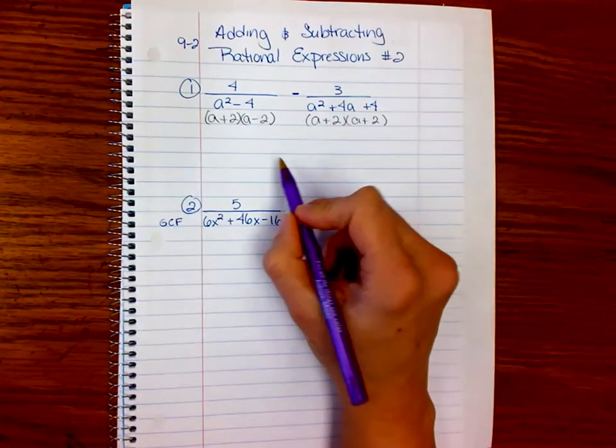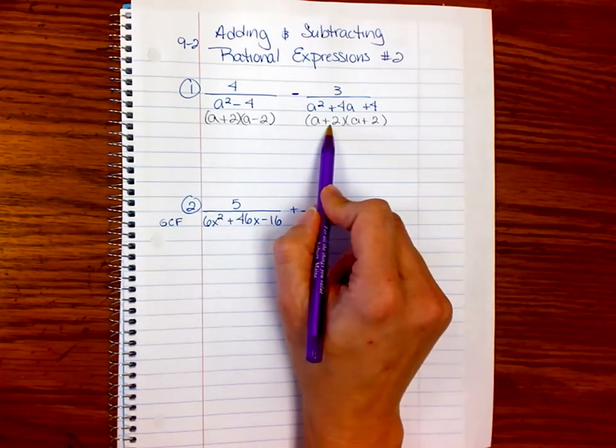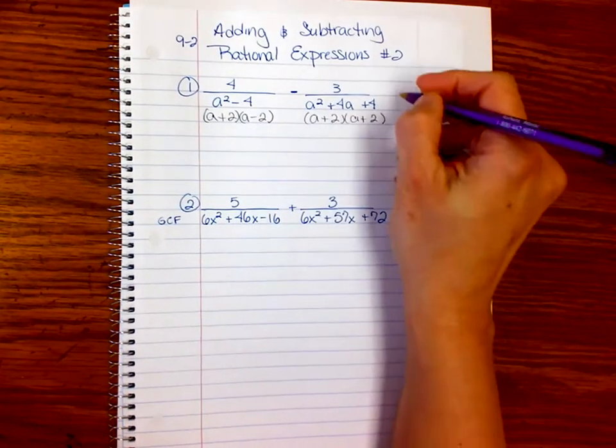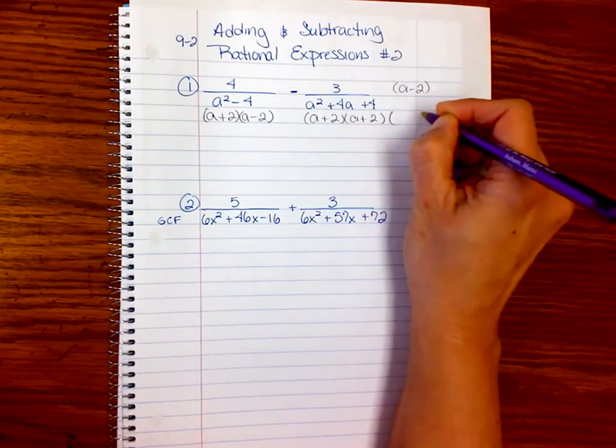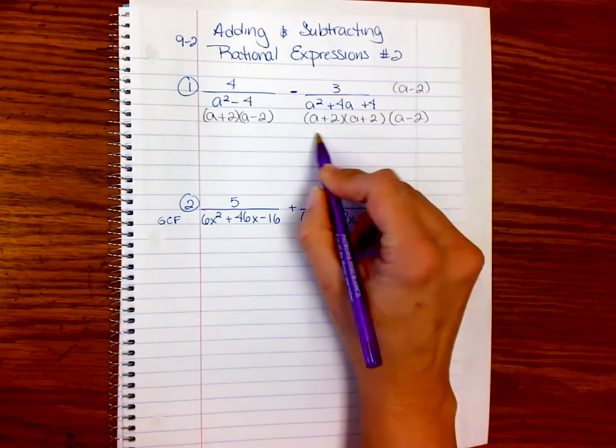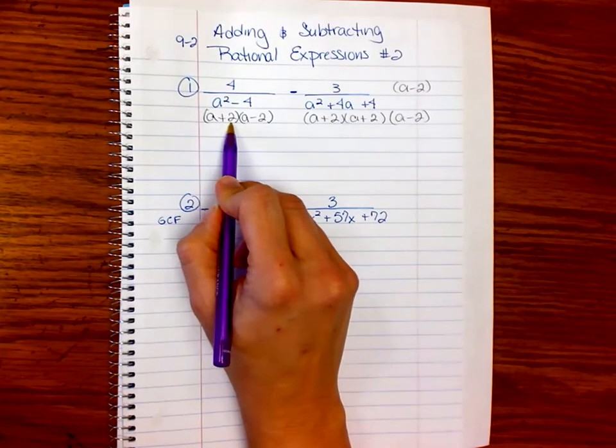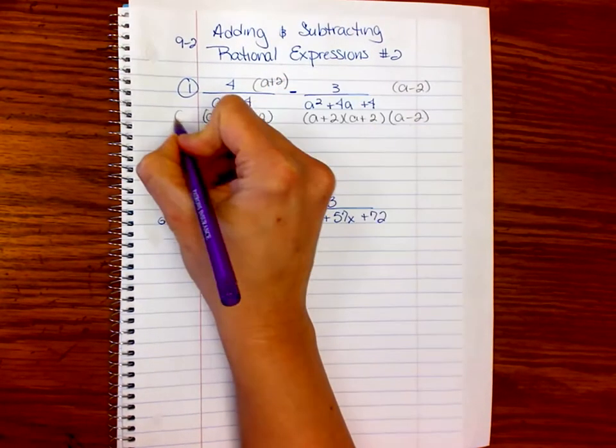So we have an a plus 2 in common. That means we have two a plus 2s over here, but we don't have an a minus 2. So we're going to have to end up multiplying the top of this by a minus 2, so we can get all three factors down here. And since we need an extra a plus 2, I'm going to multiply this by a plus 2 and get another one up here.